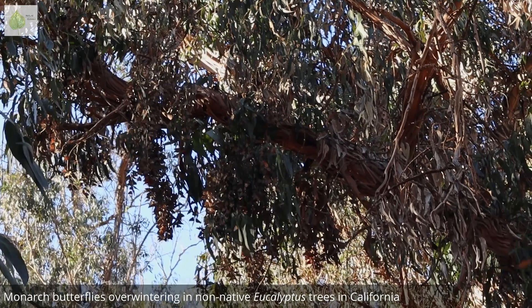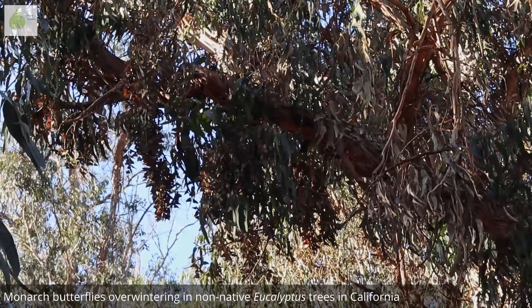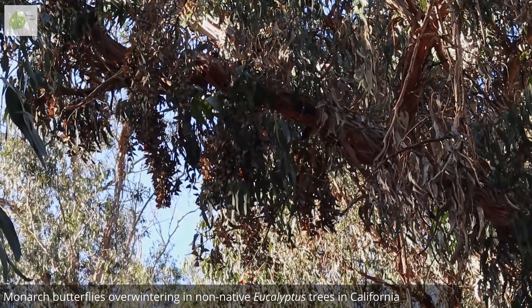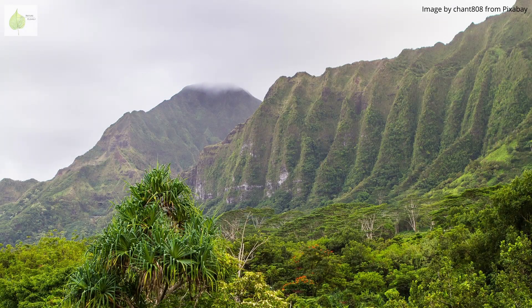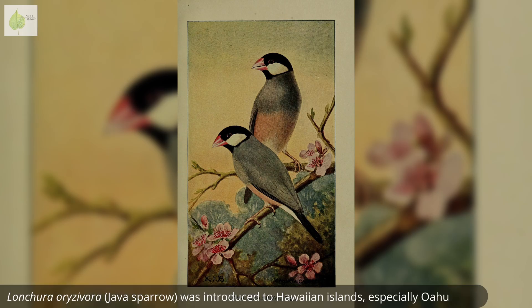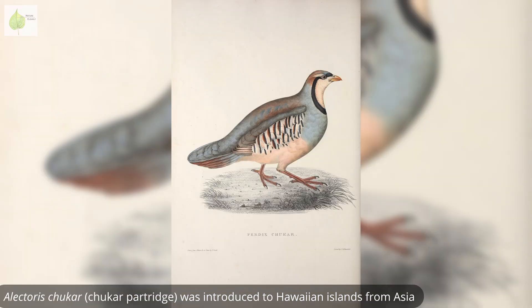Positive effects of non-native species on the environment are also a possibility — something that is not often talked about. Non-native species often take on the role of native species that are no longer present in the environment. For example, many species of non-native birds in the Hawaiian islands now play a crucial role in seed dispersal of native plants, as many of the native birds who used to spread the seeds are now either extinct or have disappeared from that environment. Nature has a unique ability to always find a balance.